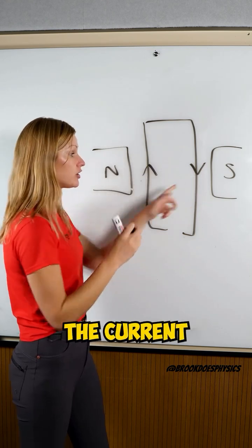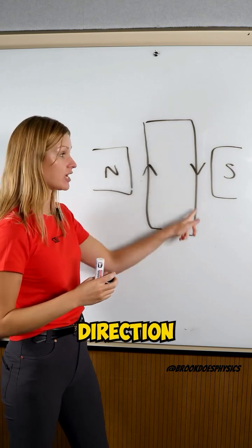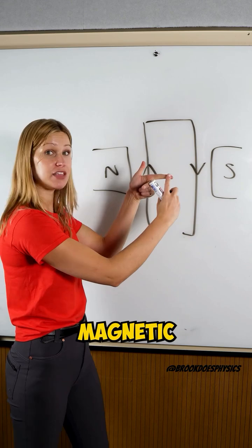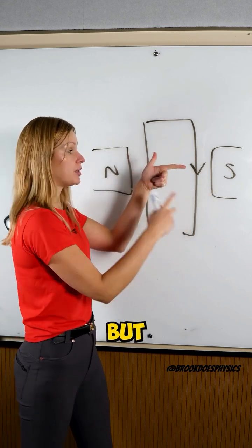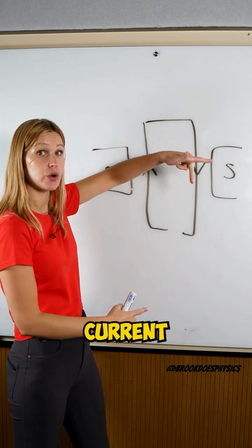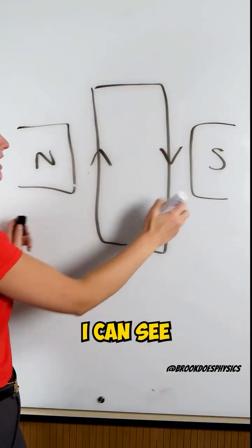But here, the current on the wire here is going the opposite direction, it's going down now. So if I use FBI, I keep my magnetic field going from north to south, but now my current right here is going down, so I have to rotate my hand to have the current going down.